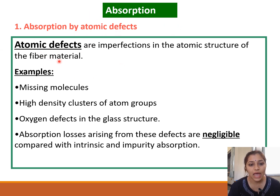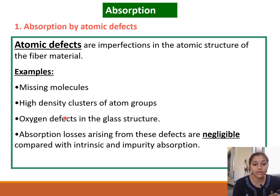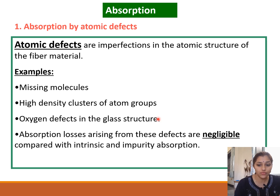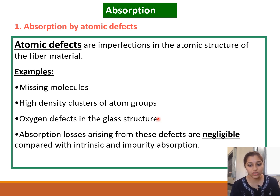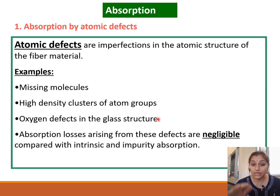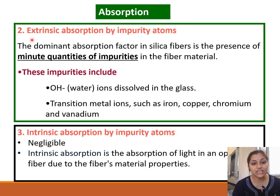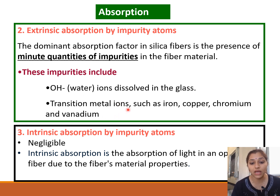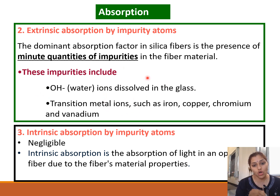The very first source of absorption is atomic defects. Atomic defects can be missing molecules, high-density clusters of atom groups, or oxygen defects in the glass structure. Because of atomic defects in the fiber structure, light gets absorbed within the fiber — but this absorption is negligible compared to extrinsic absorption. Extrinsic absorption is due to the presence of minute quantities of impurities such as water ions dissolved in the glass and transition metal ions such as iron, copper, chromium, and vanadium.